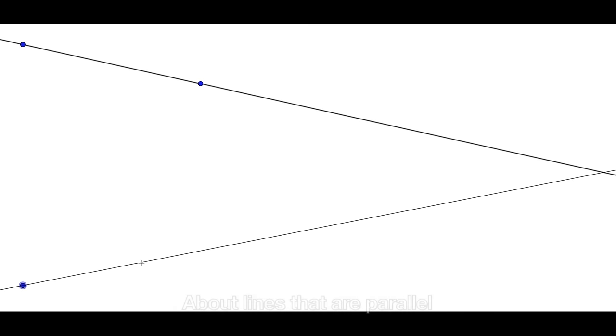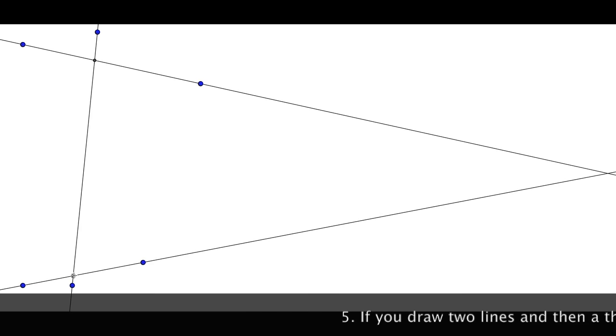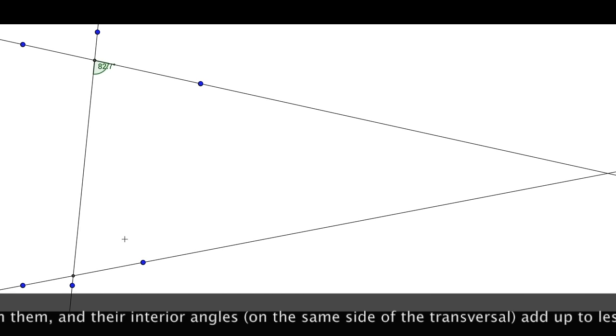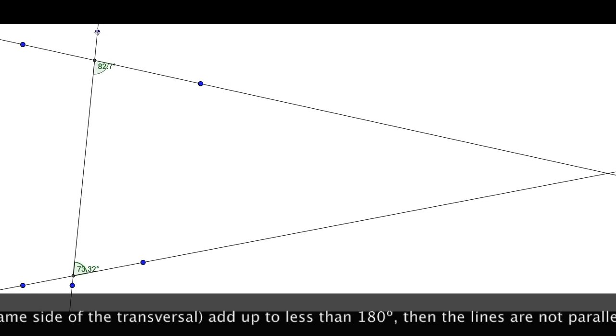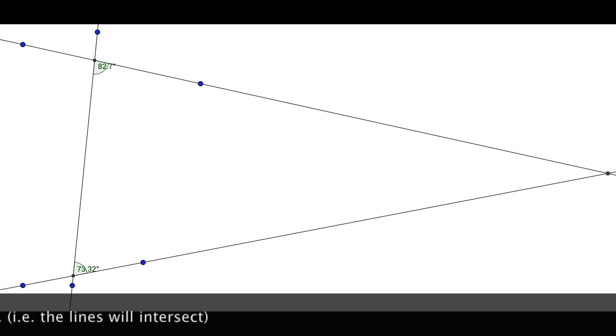Number five, the drop's a bombshell about lines that are parallel. If you draw two lines and then a third right through them, and interior angles add up to each other than 180, are they parallel? No.